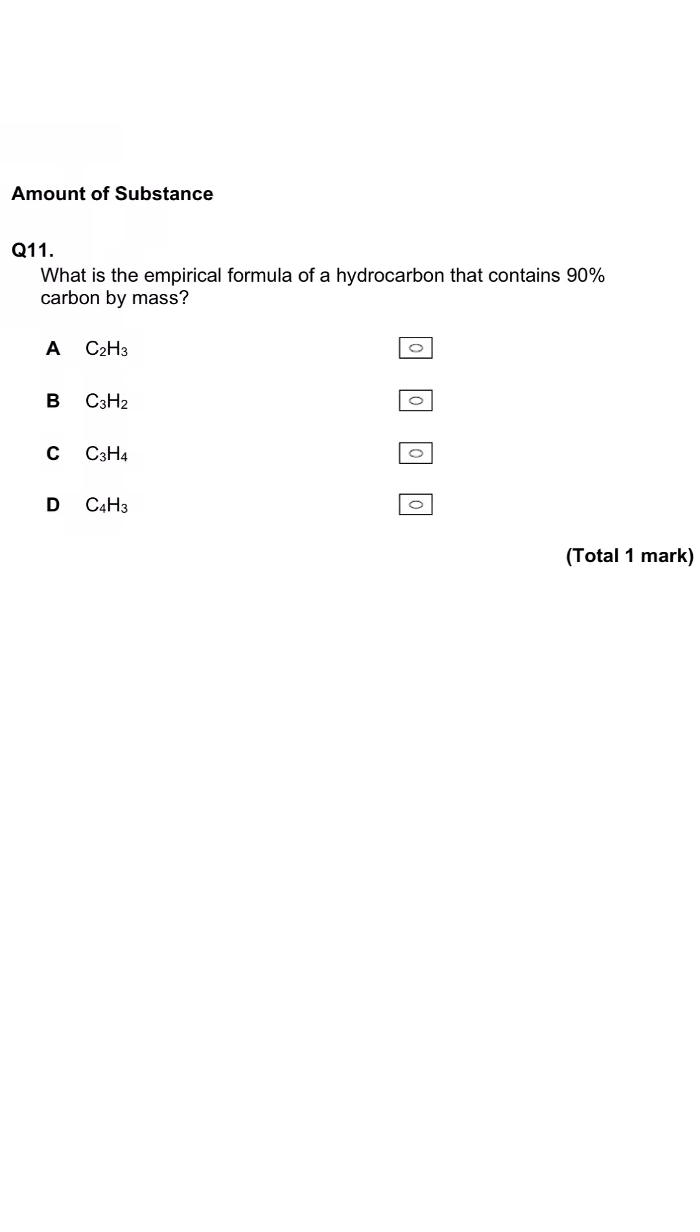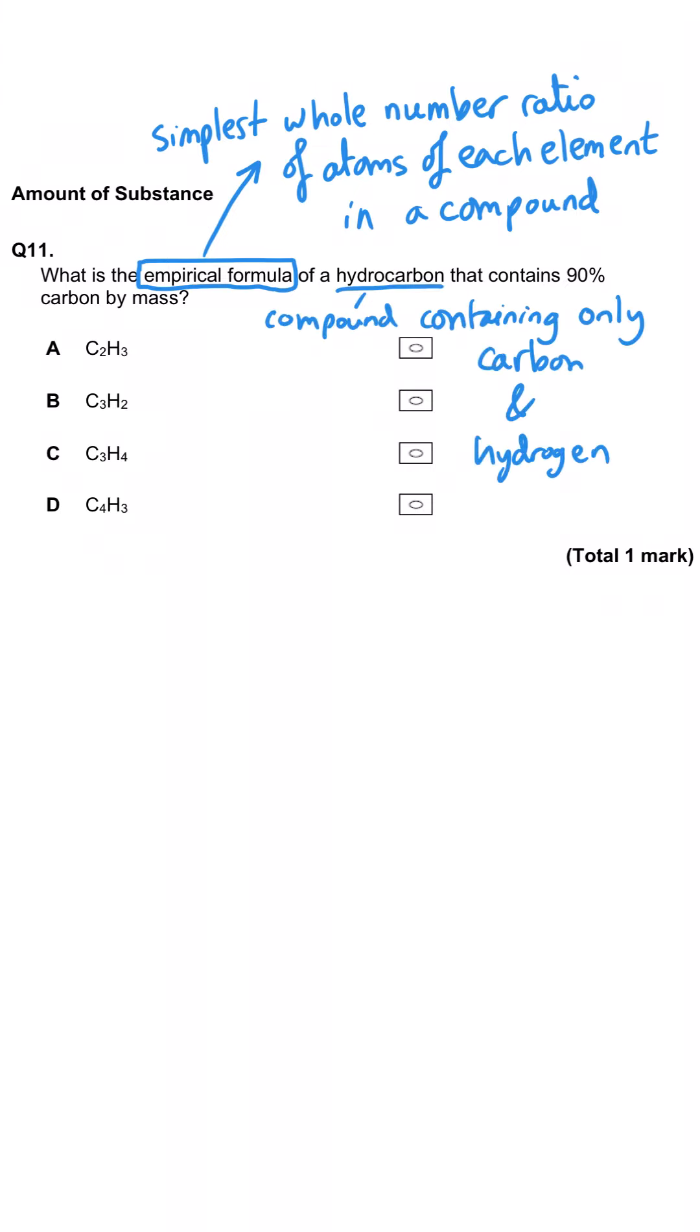In this question we're being asked what the empirical formula of a hydrocarbon is that contains 90% carbon by mass. First of all, hydrocarbons are compounds that only contain hydrogen and carbon atoms. So if it's 90% carbon it must be 10% hydrogen. If we had 100 grams of this hydrocarbon we would have 90 grams of carbon. We can treat percentages as if they were masses.